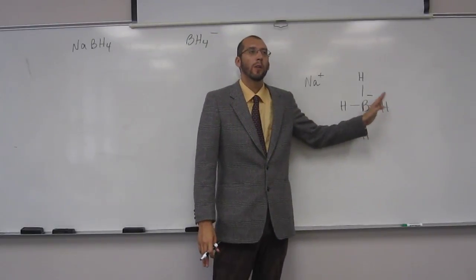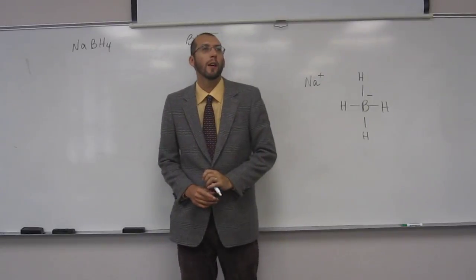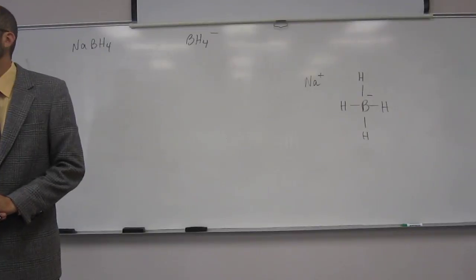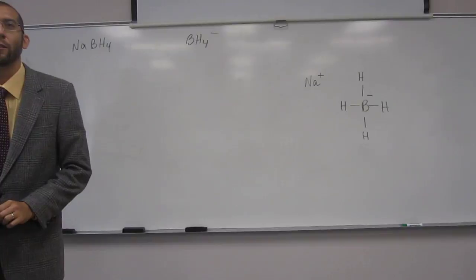What's the molecular geometry around the boron? Tetrahedral. What's the ideal bond angle? 109.5. What would be the hybridization? SP3. Very good.